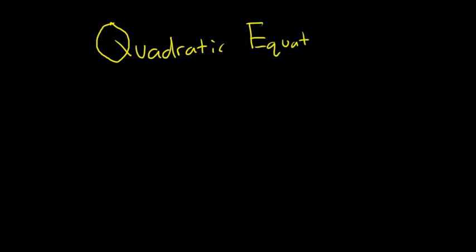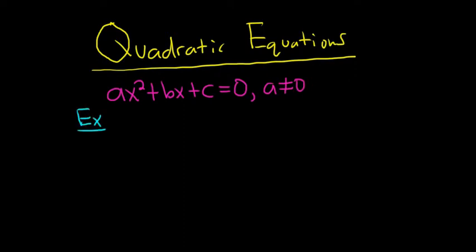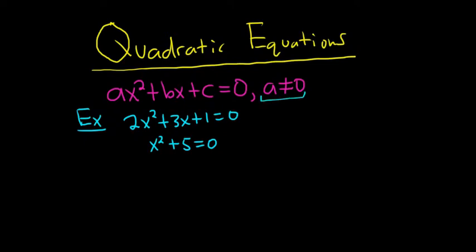In this video, we're going to talk about quadratic equations. We're primarily concerned with solving quadratic equations. A quadratic equation is an equation that can be written as ax squared plus bx plus c equals 0, where a is not equal to 0. Some examples would be 2x squared plus 3x plus 1 equals 0, or x squared plus 5 equals 0. The reason a can't be 0 is because if a were 0, the x squared term would go away, and we don't want to call it a quadratic equation if it doesn't have an x squared.